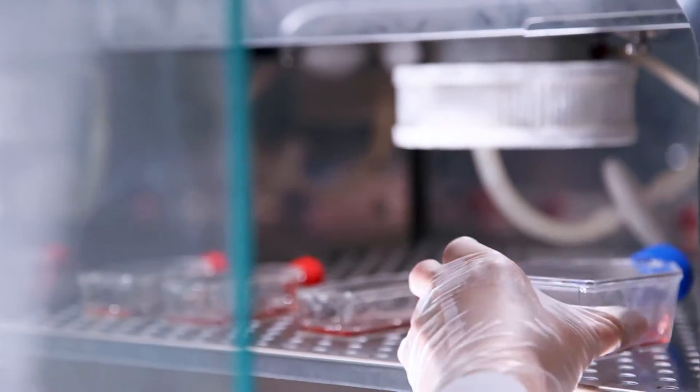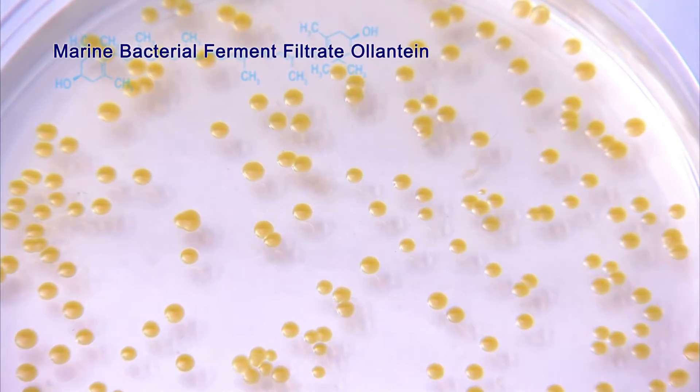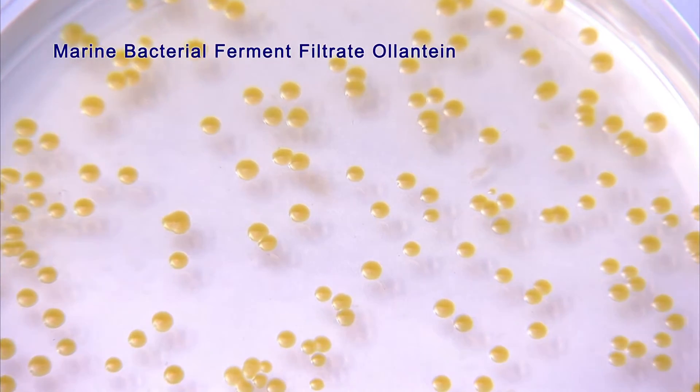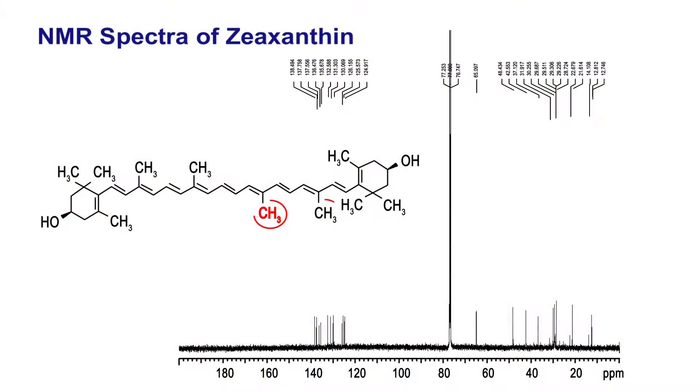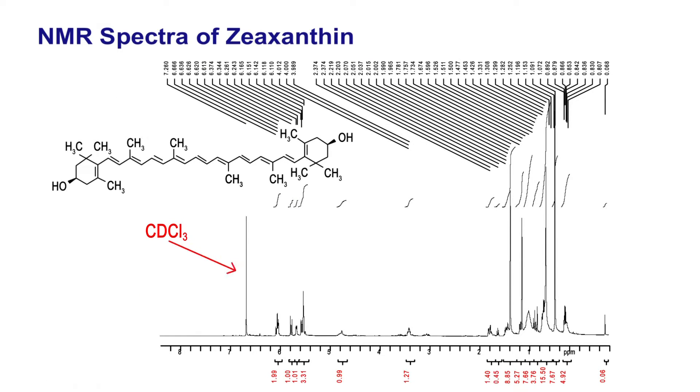In addition to blood glucose testing systems, VisGener researchers discovered that olentine, a marine bacterial ferment filtrate, contains natural zeaxanthin. This was a development milestone, allowing VisGener to expand into the health food and skin care fields.